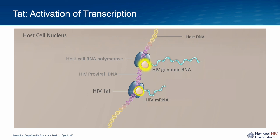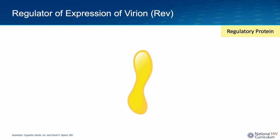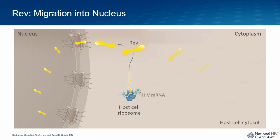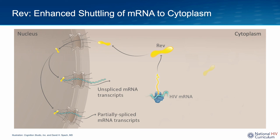The last protein to discuss is regulator of expression of virion, or REV for short. The HIV regulatory protein REV is one of the first proteins to be made by HIV. Much of the REV that is synthesized rapidly migrates back into the host cell nucleus. Inside the host cell nucleus, REV shuttles unspliced or incompletely spliced HIV mRNA from the nucleus into the cytoplasm. Thus, the major role of REV is to accelerate HIV protein synthesis.